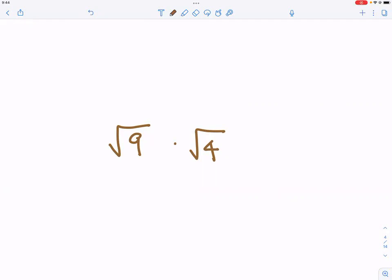What's √9? Three. √4? Two. So 3 times 2 is 6, so we know the answer is 6. So now let's do a little experiment. Let's try to multiply the numbers underneath them together and see if it's equal to 6. And √36 is equal to 6.